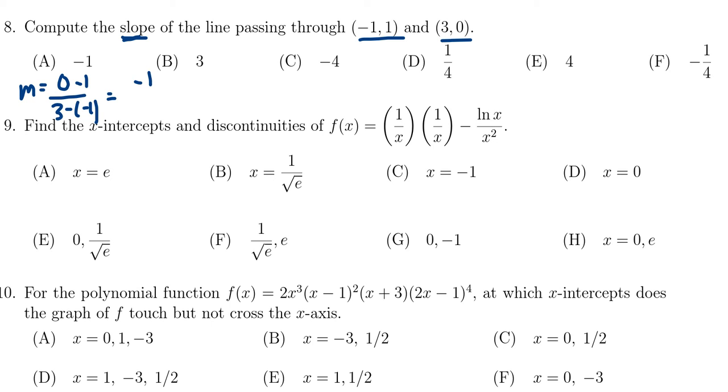In the numerator, we have negative 1. In the denominator, we have 3 plus 1, so we end up with negative 1 fourth. The correct answer would then be choice F.